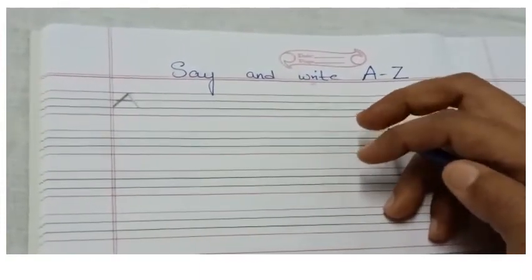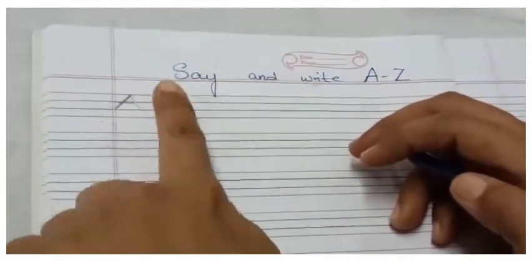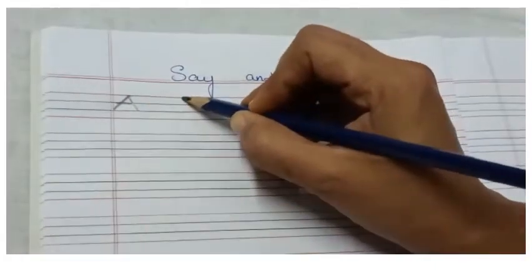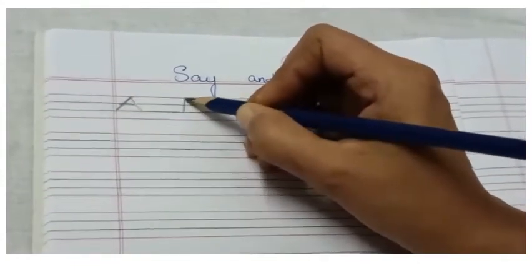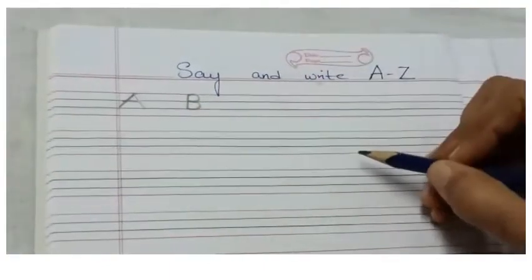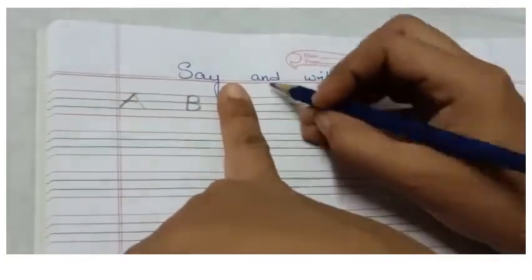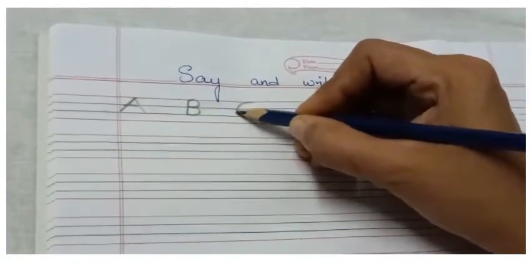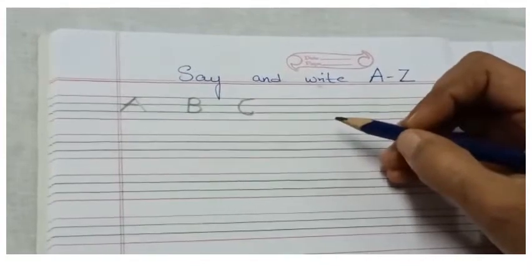Give one finger space, we will be writing capital letter B. Standing line, right curve, right curve — capital letter B. Again a finger space, we are going to write capital letter C — left curve, capital letter C.